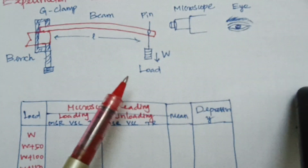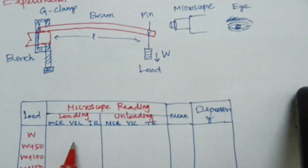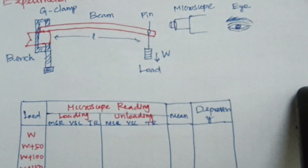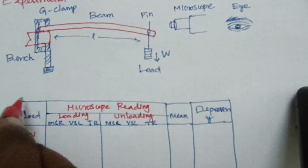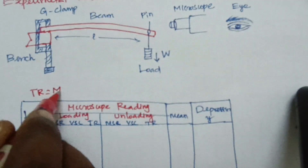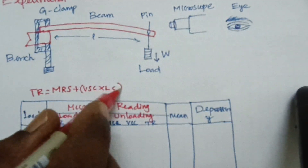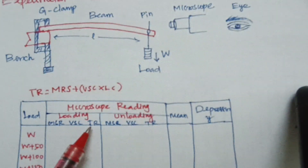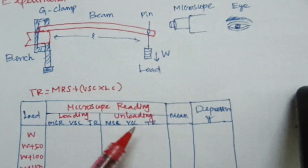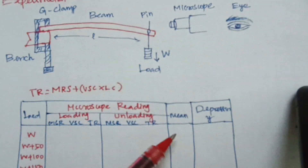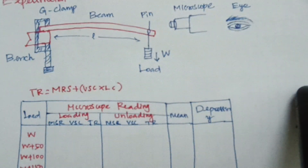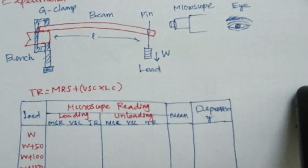Up to 250 grams. Now you have to adjust by using the top screw so that the pin is on the horizontal line. Then take the reading: MSR and VSC. Then add another 50 grams, up to 250 grams, adding 50 grams each time.